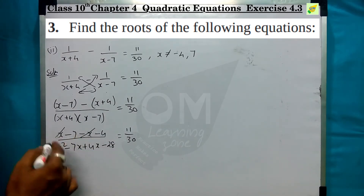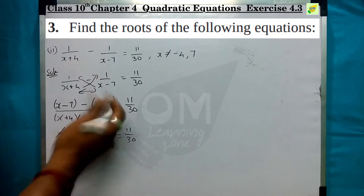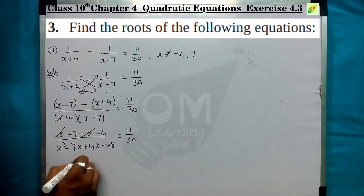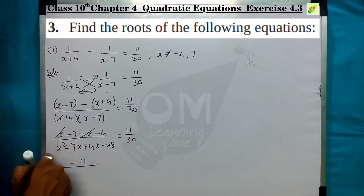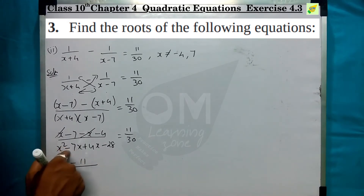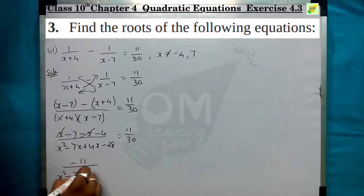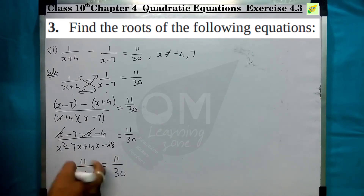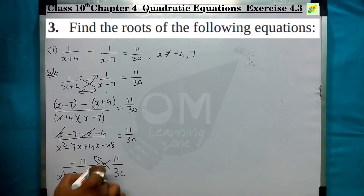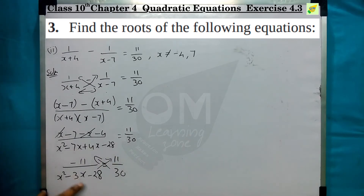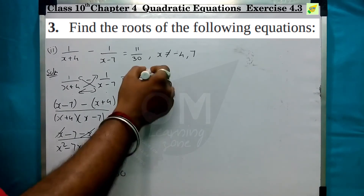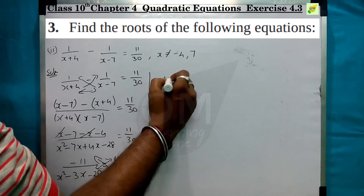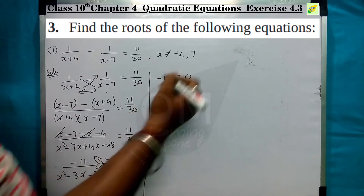Minus 4 is minus 11 divided by. This gives x² minus 7x plus 4x minus 28, which simplifies to x² minus 3x minus 28, equal to 11 by 30. You can cross-divide here — this is minus 11 into 30.